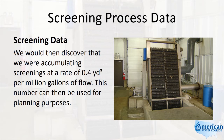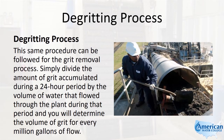This number can then be used for planning purposes. This same procedure can be followed for the grit removal process. Simply divide the amount of grit accumulated during a 24-hour period by the volume of water that flowed through the plant during that period, and you will determine the volume of grit for every million gallons of flow.